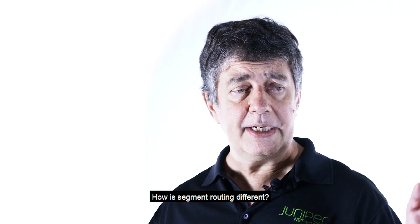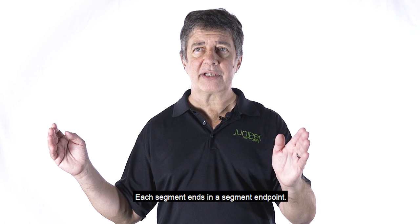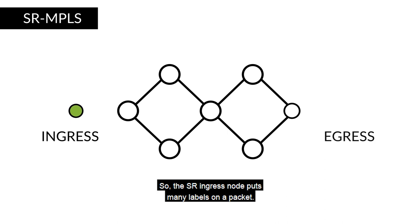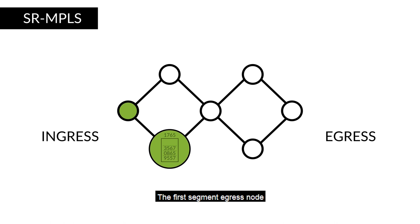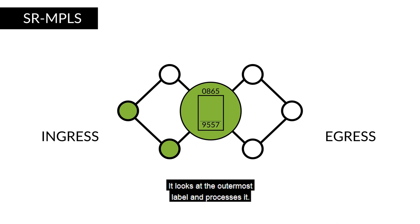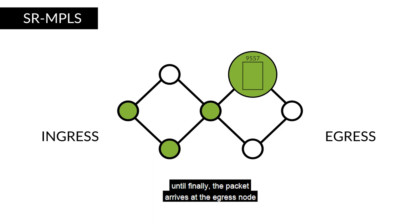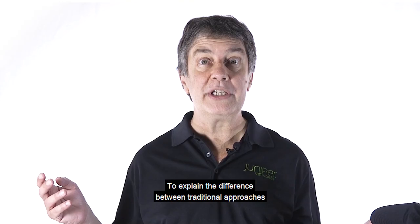How is segment routing different? In segment routing, we divide that path into segments. Each segment ends in a segment endpoint — you can think of it as being a waypoint. The SR ingress node puts many labels on a packet; each label represents a segment. It sends the packet to the first segment egress node, which looks at the outermost label, processes it, pops that label off, and sends it on to the next. This continues until finally the packet arrives at the egress node with no labels whatsoever.